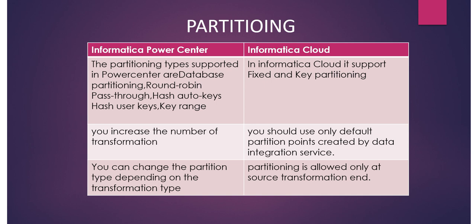There are differences between Informatica PowerCenter and Informatica Cloud partitioning. PowerCenter provides many partitioning types: database partitioning, round robin, pass-through, and hash key. Informatica Cloud offers only two — fixed and key range. In PowerCenter, you can increase the number of transformation partition points, but in Informatica Cloud partition points are created by default by the data integration service. In Informatica Cloud, partitioning is allowed only at the source level.